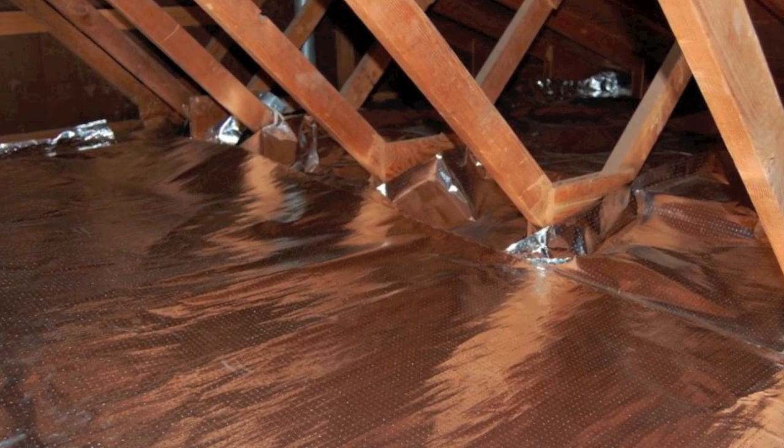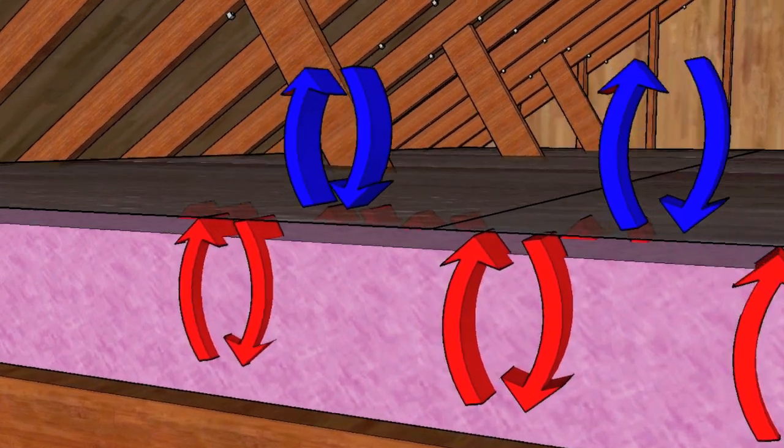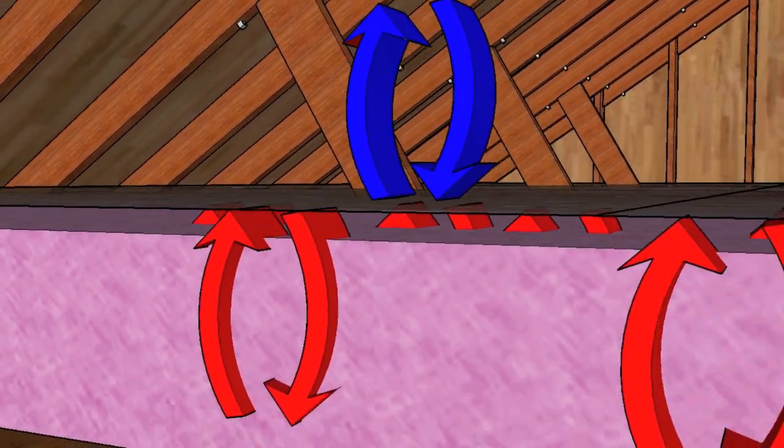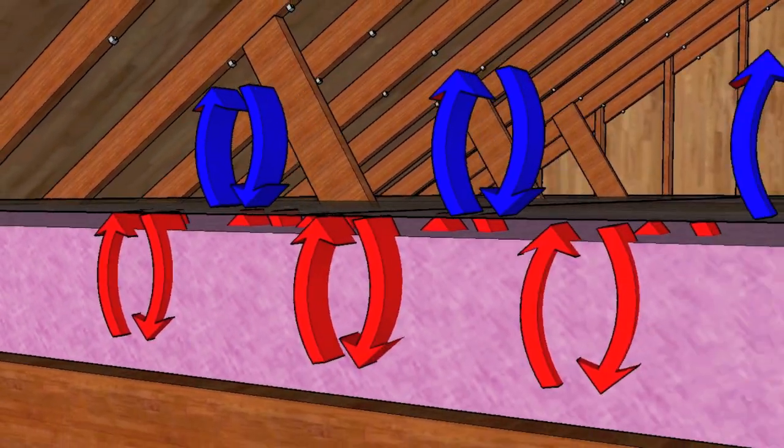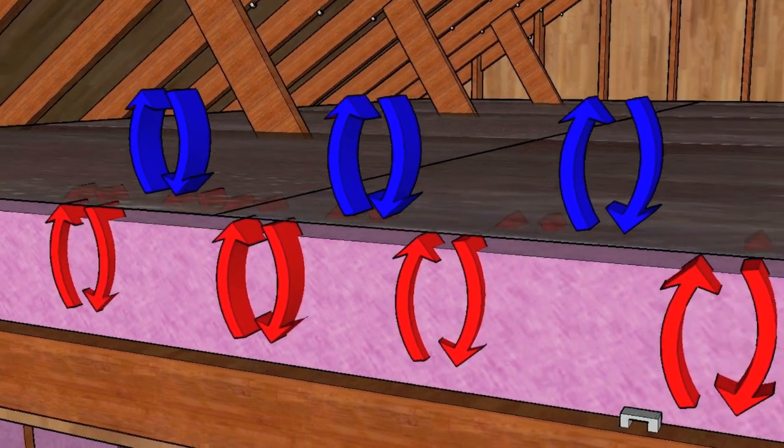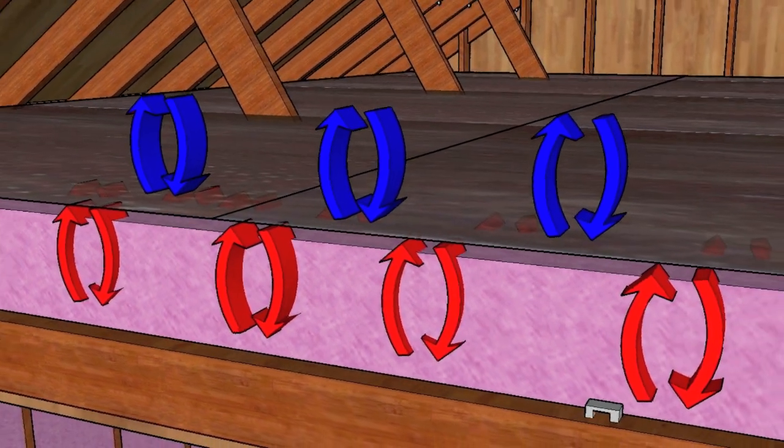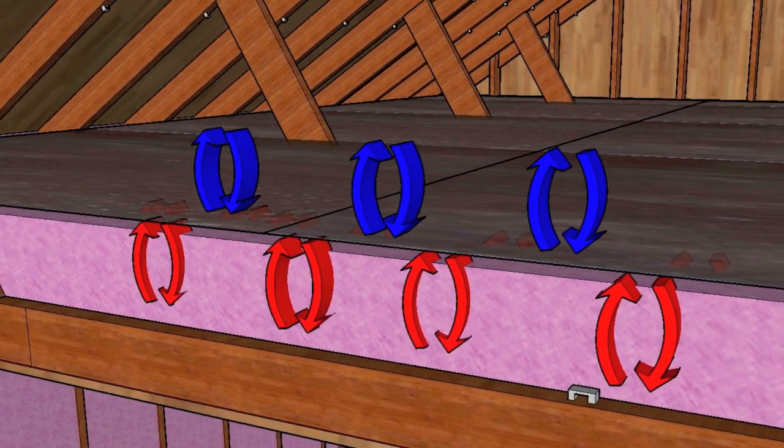The colder it gets, the more air movement. This is one reason R values decrease in colder temperatures. By installing attic foil on top of the attic insulation, it helps act as an air barrier and will reduce the amount of air movement within the insulation and help maintain the R value.